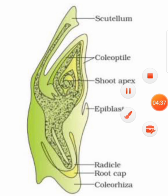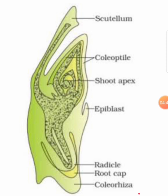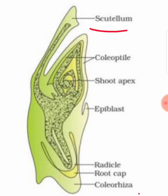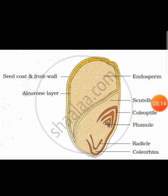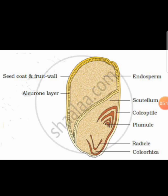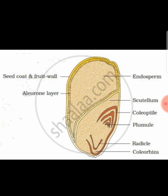This is the structure of the embryo of grass or a monocot. The cotyledon is called the scutellum. At the lower end you can find the radicle and root cap in an undifferentiated sheet called the coleorhiza. In the maize seed, you again find the scutellum as the cotyledon, with the radicle and coleorhiza at the lower end, and the plumule enclosed in the coleoptile. Around the endosperm you can find the aleurone layer.